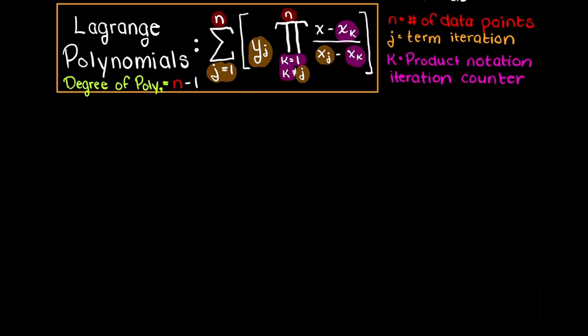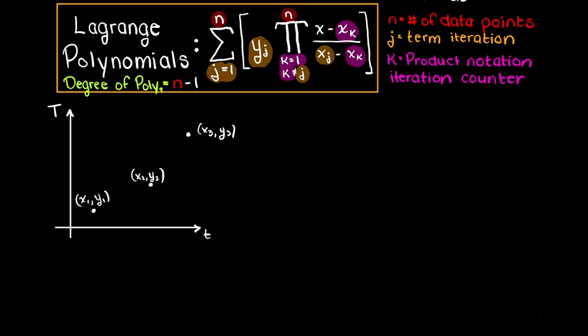Let's say we have three data points for our previous bucket example. We have three data points, therefore n equals 3, and this means we will have a second degree Lagrange polynomial, as we always have n minus 1 as our degree. This means we will have three terms. We begin with our first term when j equals 1. For our y1 term, because we are on j equals 1, we will not have any x1 values in this first term, since in our product notation we exclude when k equals j.